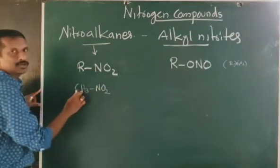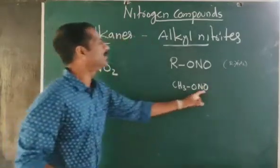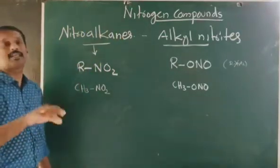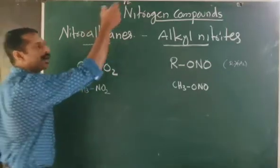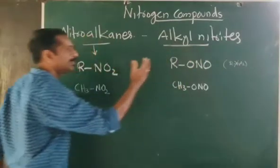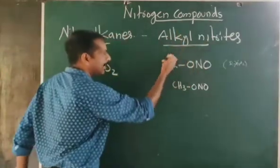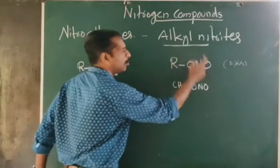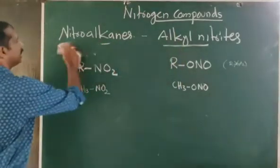An example of nitro alkanes is CH₃NO₂, which is nitromethane. An example of alkyl nitrites is CH₃ONO, which is methyl nitrite. So in nitrogen compounds, under aliphatic nitro compounds, there are two types: nitro alkanes and alkyl nitrites. Same molecular formula RNO₂, but R is attached to N in nitro alkanes and R is attached to oxygen in alkyl nitrites.